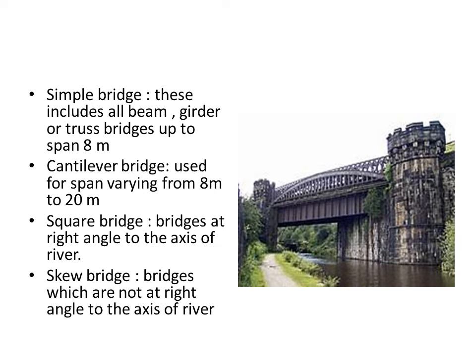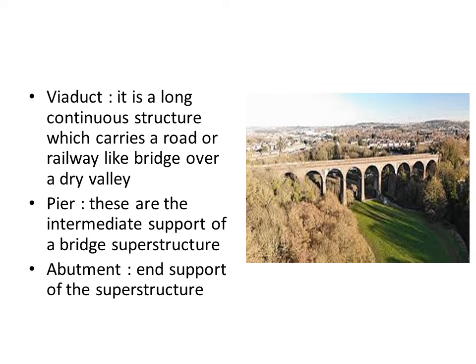Bridges classified on the basis of span: simple bridges have a span up to 8 meters, while cantilever bridges have a span from 8 meters to 20 meters. Skew bridges are bridges where the axis of the bridge is not at right angles to the axis of the river, as shown in the figure.